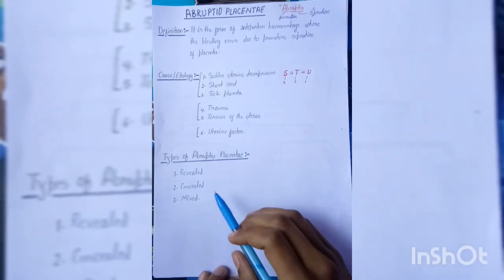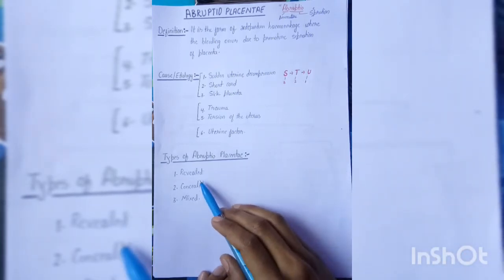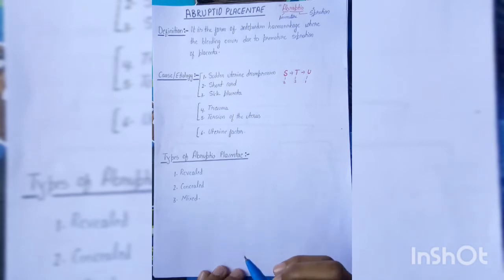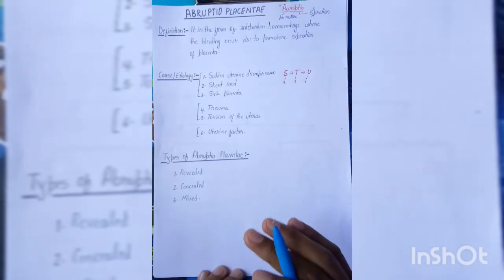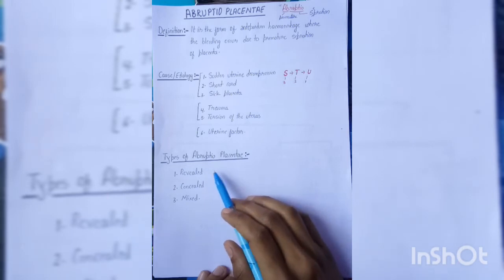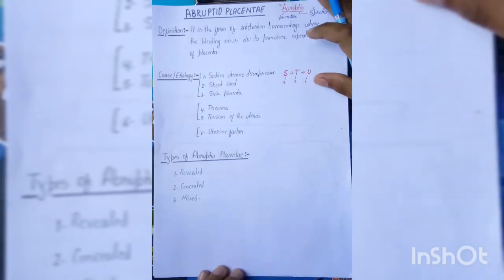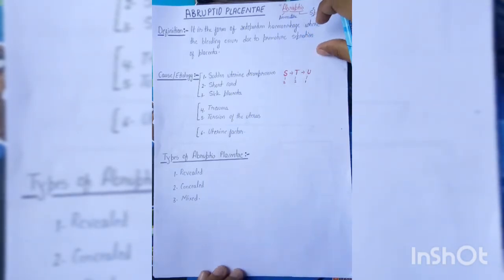Types of abruptio placenta: there are three types — revealed, concealed, and mixed. Compare this with placenta previa which has four types (Type 1–4). Abruptio placenta has three: revealed, concealed, and mixed.